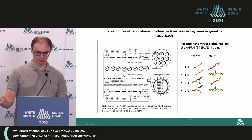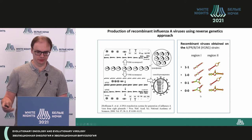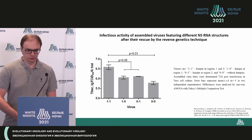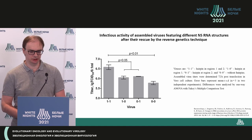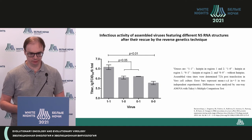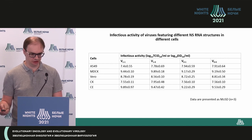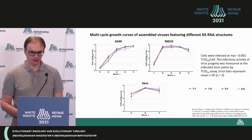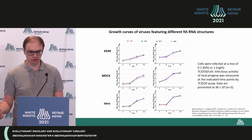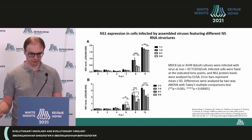Through the reverse genetic approach, we obtained four viruses — one with a stem loop structure in both regions (1,1), one with stem loop in one region but not the other (1,0), one with the reverse (0,1), and one with neither (0,0). We studied infectious activity of the viruses in various cell cultures and found no statistically significant differences between those viruses. We also studied growth curves of those viruses in different cell cultures and again found no significant changes.